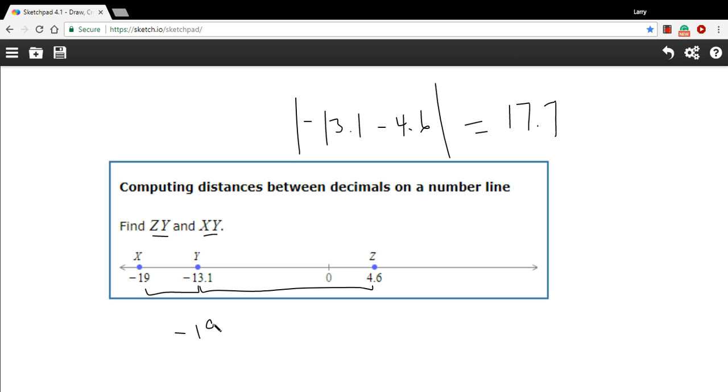Negative 19 minus a negative 13.1. And we'll take the absolute value of that. When you subtract a negative, it's like adding. So this is negative 19 plus 13.1, and that comes out to a negative 5.9. You take the absolute value of that, you get a positive 5.9.